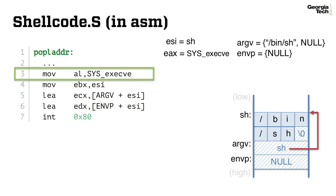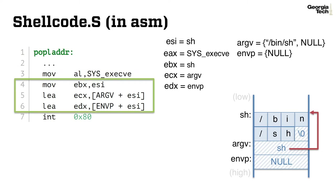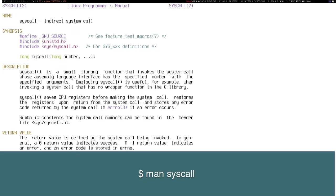To invoke the execv system call, we first assign the system call number to the EAX register, and put first, second, and third argument to EBX, ECX, and EDX register, respectively. These are simple conventions of the Linux operating system. To find out these details, please check the man page of the system call by typing man syscall.